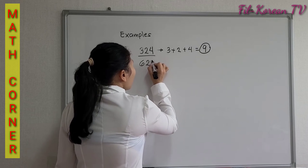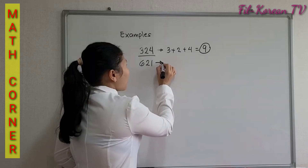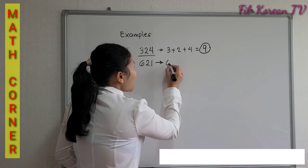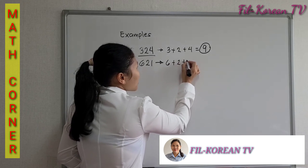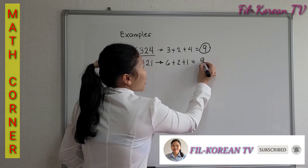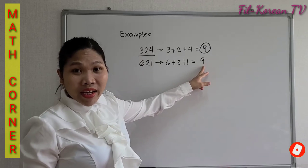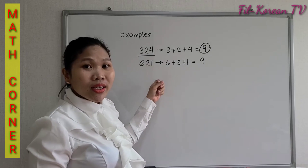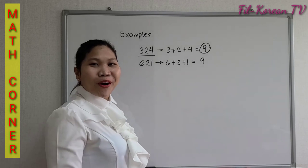621. It has 3 digits, so we will just add: 6 plus 2 plus 1 equals 9. Again, 9 is a multiple of 3, therefore 621 is divisible by 3.